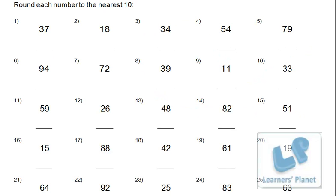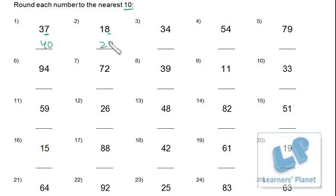Now let's look at the practice sheet. Round each number to the nearest ten. The first number has units digit 7, which is more than 5, so rounding is to the upper side — answer is 40. The next has units digit 8, more than 5, so rounding is to upper side — answer is 20. For 34, the units digit is less than 5, so rounding is to the lower side — answer is 30.